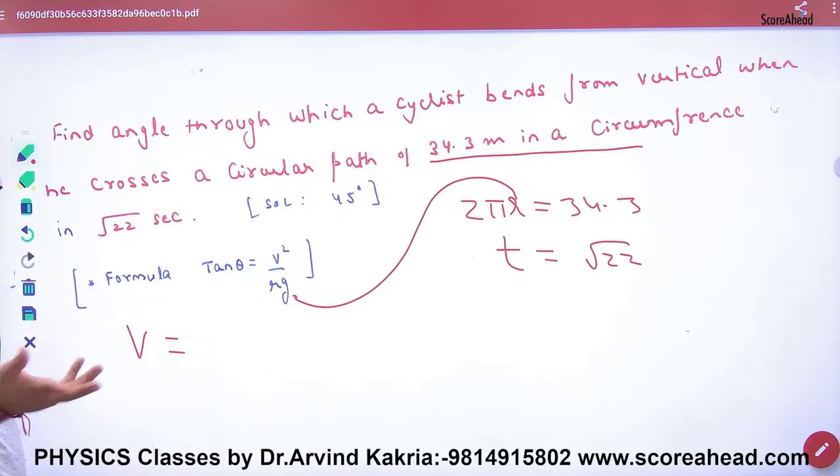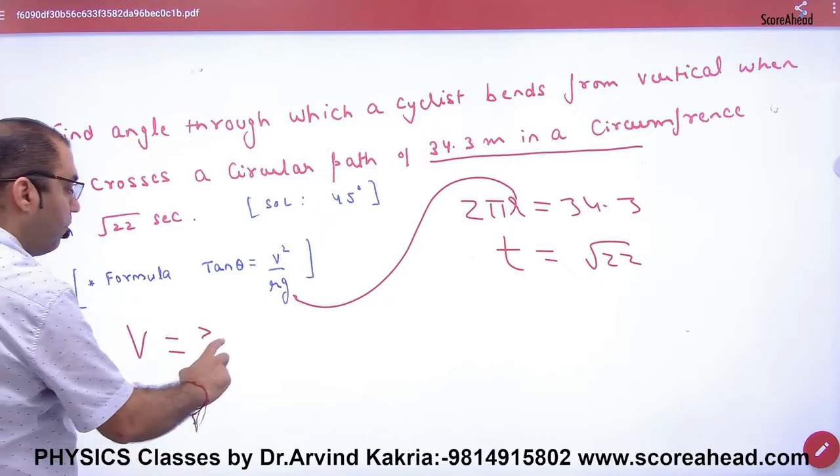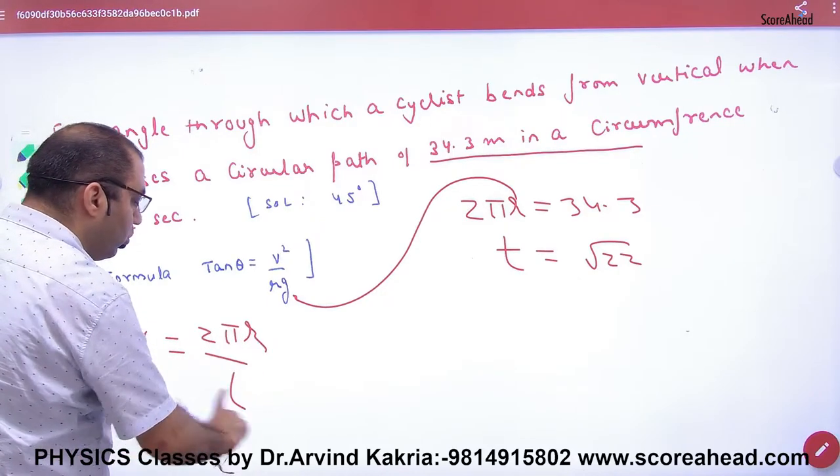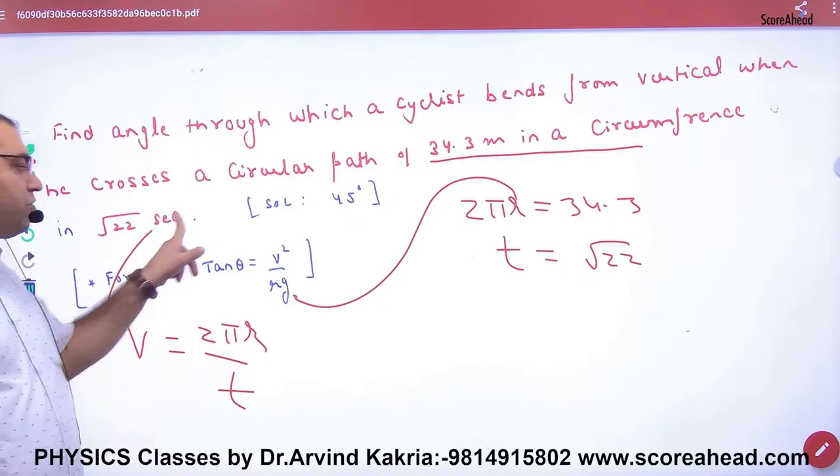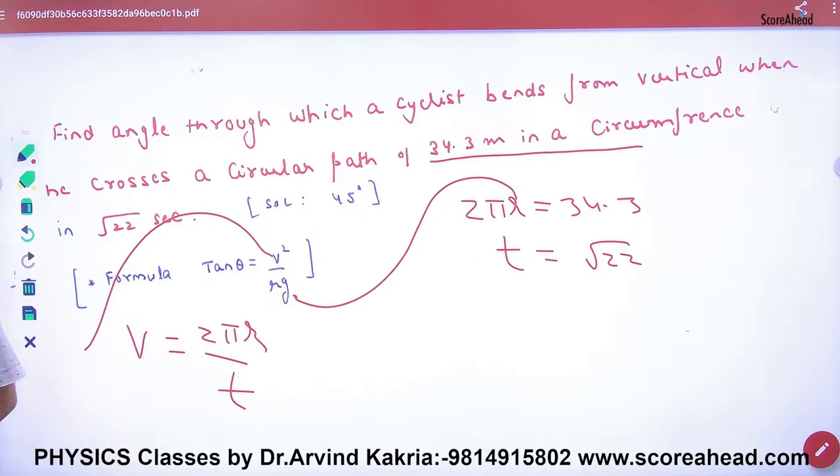Cyclist ki speed kya hai? 2 pi r ko time se divide. Distance ko time se divide karayenge to kya jayegi? Velocity. This velocity ki value ko solve kar ki yaha put kar lena tan theta answer ayega. Method saman mehara hai. V kaise ayega or isme r kaise ayega clear hai.